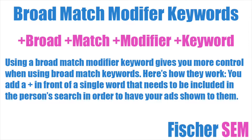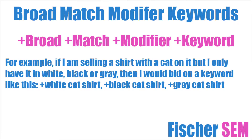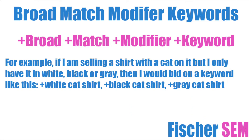Broad match modifier. Using a broad match modifier keyword gives you more control when using broad match keywords. Here's how they work: you add a plus sign in front of a single word that needs to be included in the person's search in order to have your ad shown to them. For example, if I'm selling a t-shirt with a cat on it but I only have it in white, black, or gray, then I would bid on a keyword like this. This would ensure that the person searching for a cat shirt will also be willing to buy the colors I have in stock, as long as they're including the color of the shirt they are searching for.